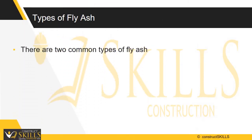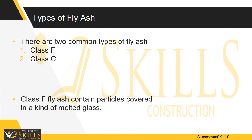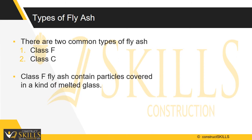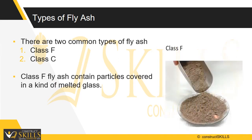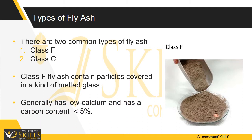There are two common types or classes of fly ash: Class F and Class C. Class F fly ash contains particles covered in a kind of melted glass. This greatly reduces the risk of expansion due to sulfate attack, which may occur in fertilized soils or near coastal areas. Class F is generally low calcium and has a carbon content less than 5 percent, but sometimes also as high as 10 percent.